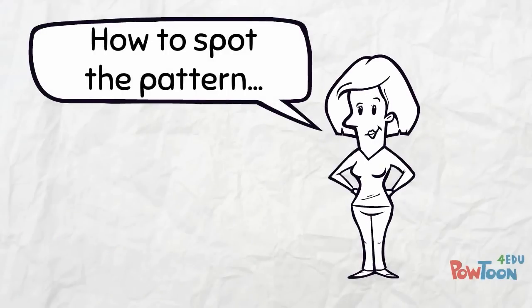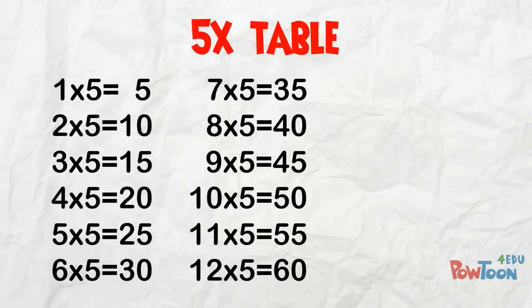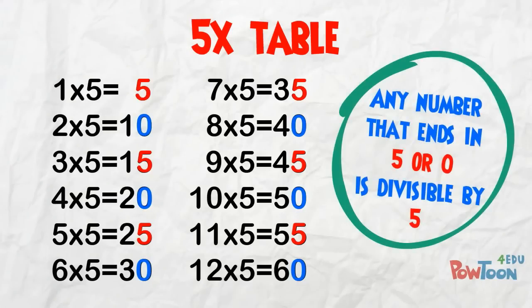Here's how to spot the pattern. Look at the 5 times table. Every multiple of 5 ends in a 5 or a 0. Any number that ends in 5 or 0 can be evenly divided by 5, so 5 is a factor!